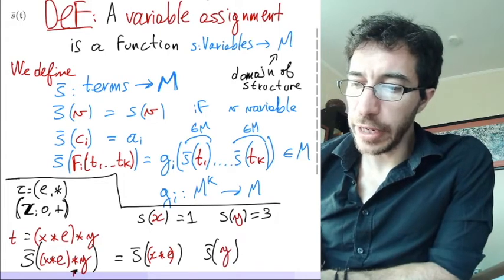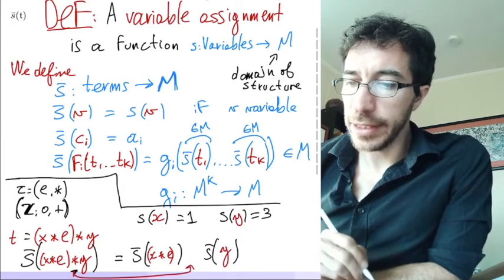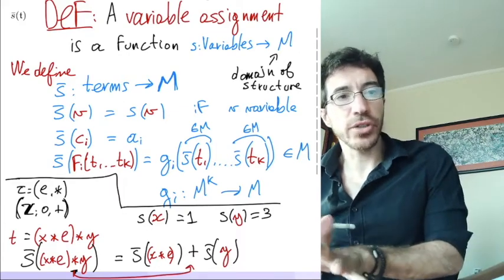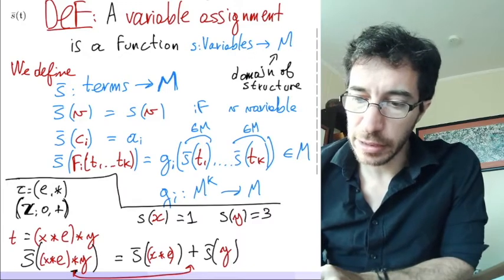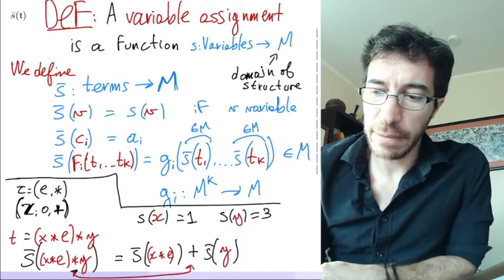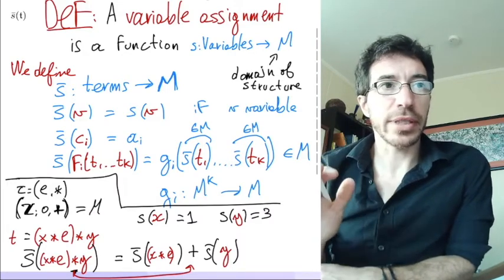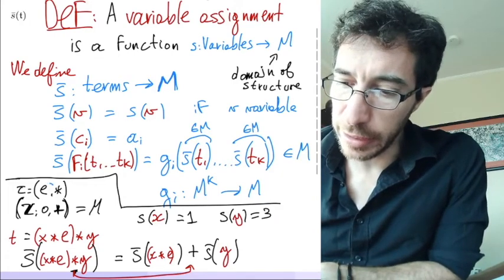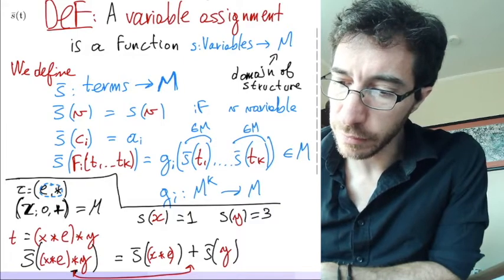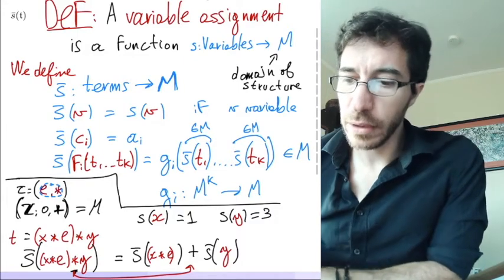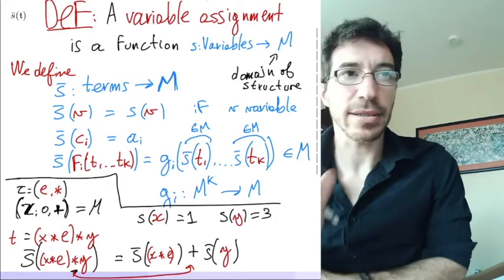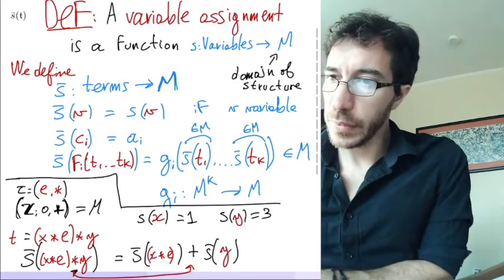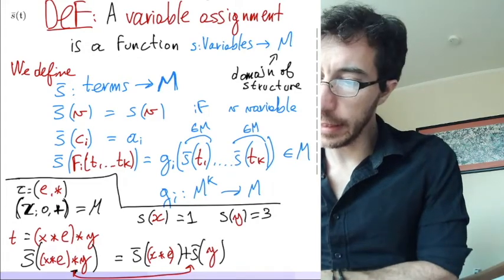And then the operation x star is going to become the interpretation, which is plus. And plus is black because plus here is not a symbol. Plus here is a function, plus on the integers. That's our structure M. Here these are the interpretations of the symbols. Our symbols are these two in the vocabulary that I should have painted red. Those are the symbols, and the zero and the plus are the actual elements.